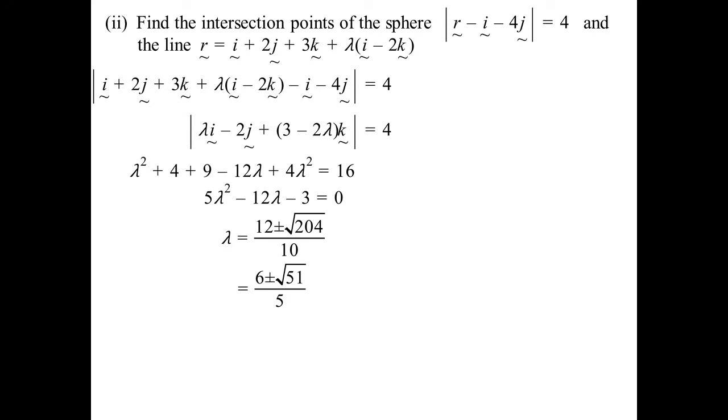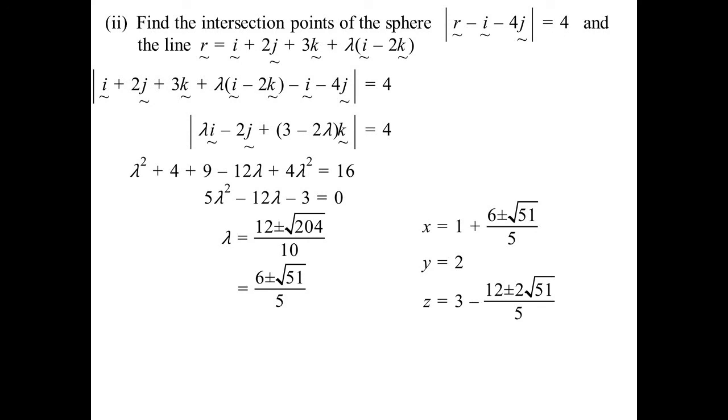Well, we know what lambda is now. So therefore, x is equal to 1 plus that wonderful expression of 6 plus or minus root 51 on 5. Y is 2. That was nice. And z 3 minus that lovely little expression there. Because it lies on the line, i plus 2j plus 3k plus lambda, I sub that in for lambda, and I will get the point. So therefore, there's our points of intersection.